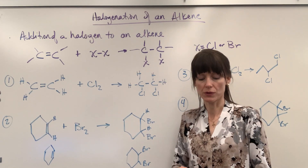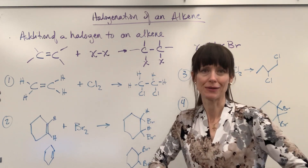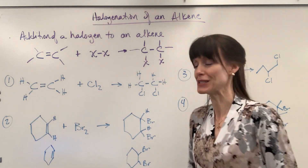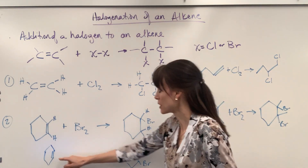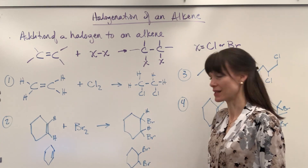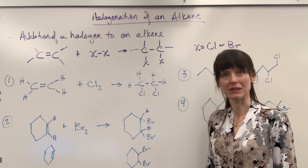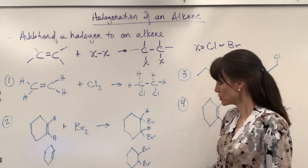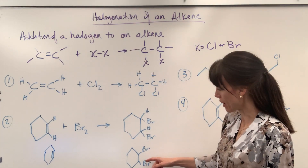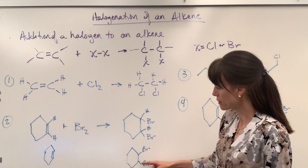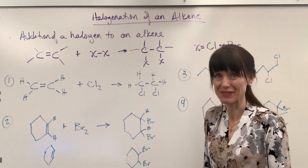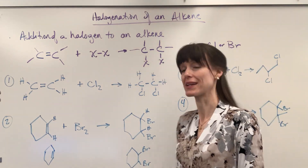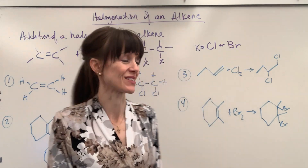So if we were drawing this, you lose that double bond and the bromines are now going to be attached. That would become 1,2-dibromocyclohexane, because the double bond is gone.